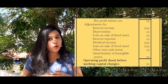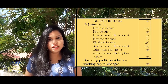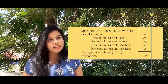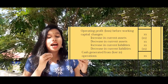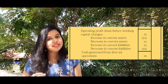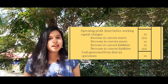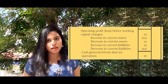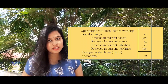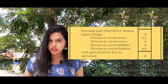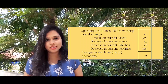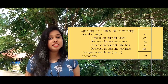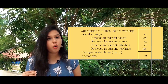From these adjustments we get the operating profit or loss before working capital changes. The changes in working capital involve current liabilities and current assets — increase in current asset, decrease in current asset, increase in current liability, and decrease in current liability. The total of changes in current assets and current liabilities gives us cash generated from operations.